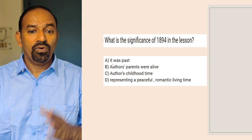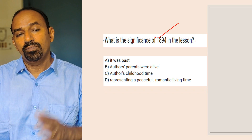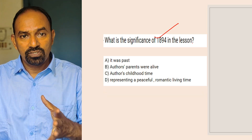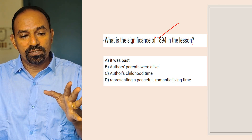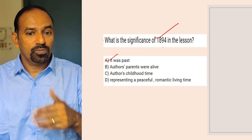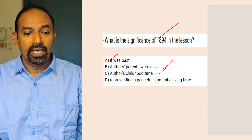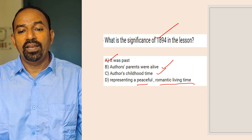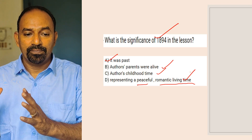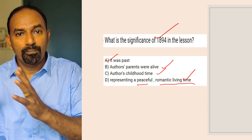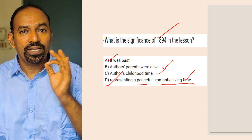Next question: What is the significance of 1894 in the lesson? The central character Charles wants to go back to 1894 Galesburg, Illinois. Options: it was the past; all these parents were alive; all this childhood time; representing a peaceful, romantic living time. The significance of 1894 is that it represented a peaceful and romantic life — people lived in peace. That is the right option.